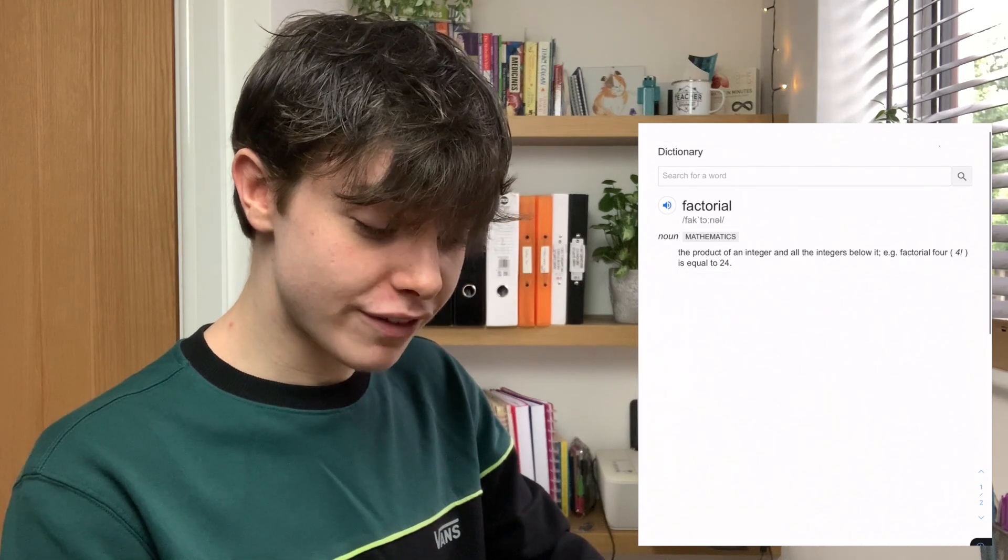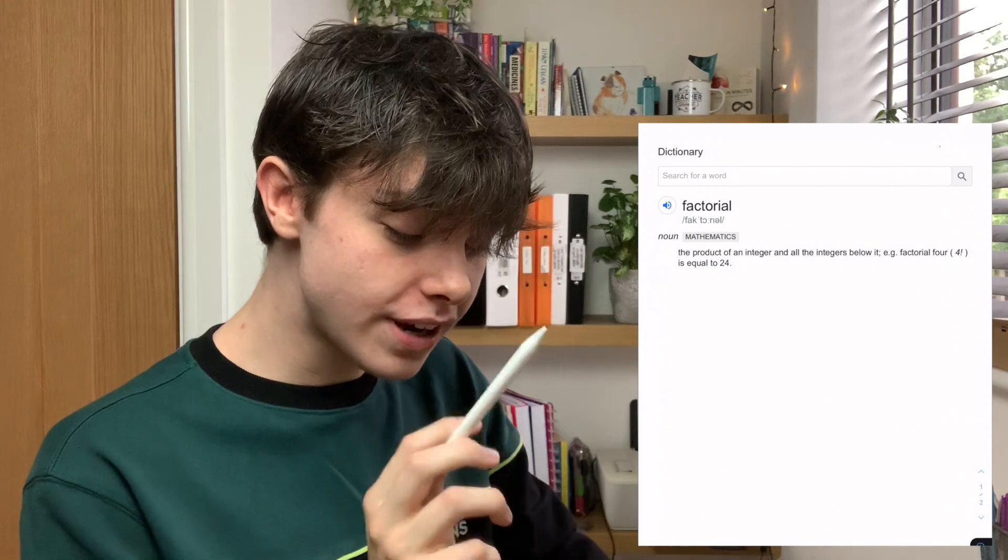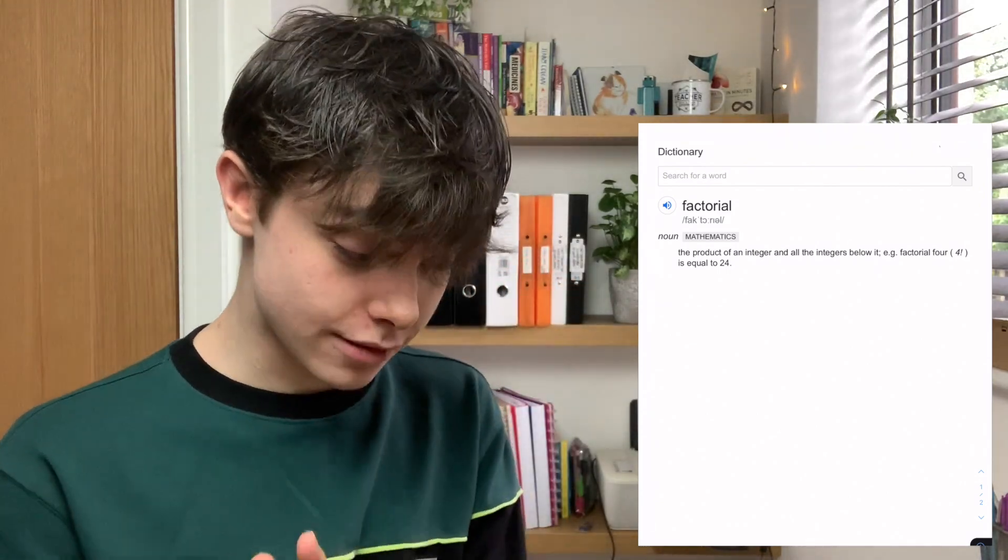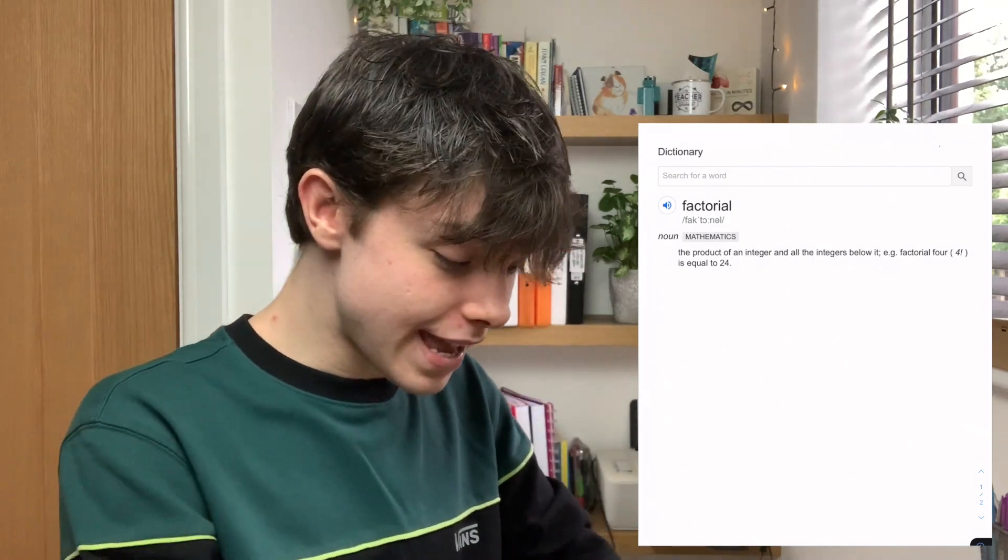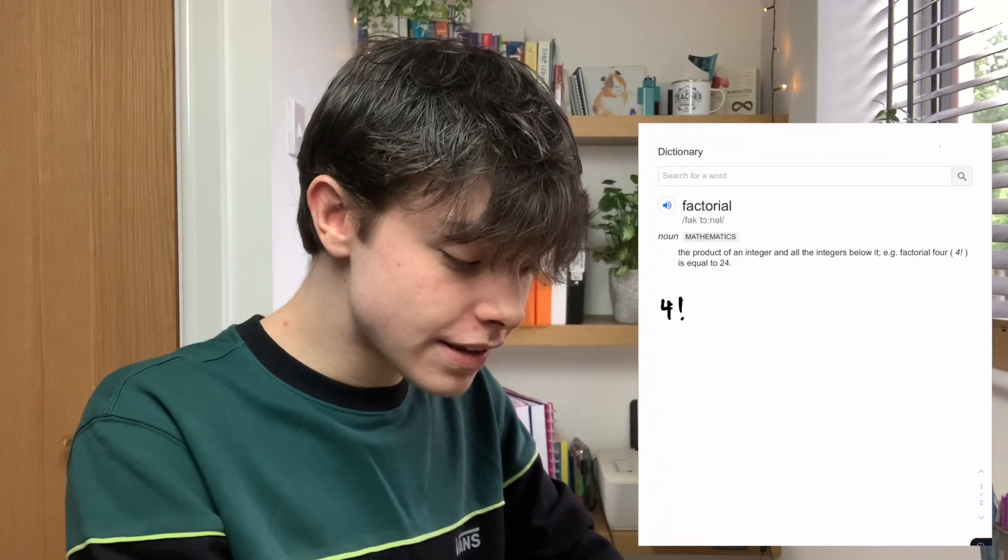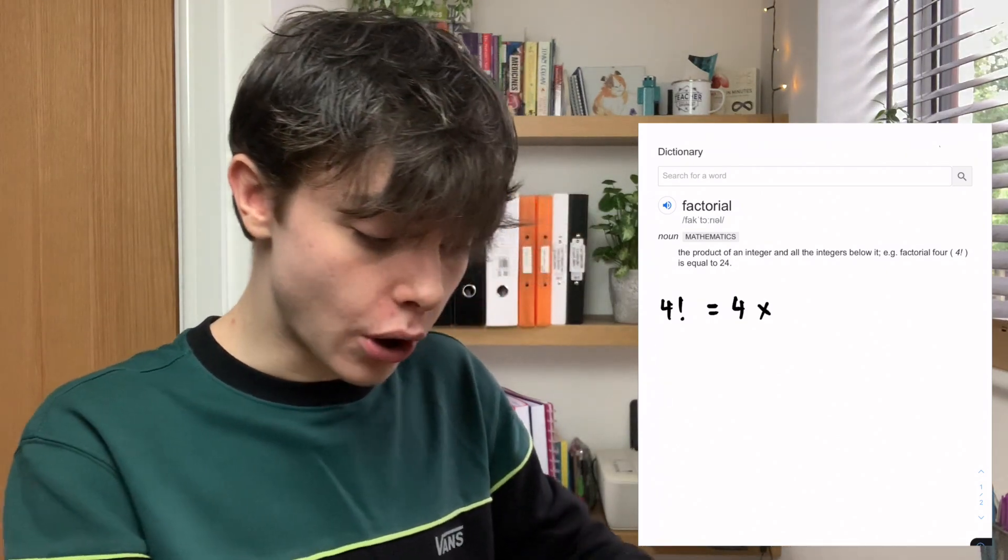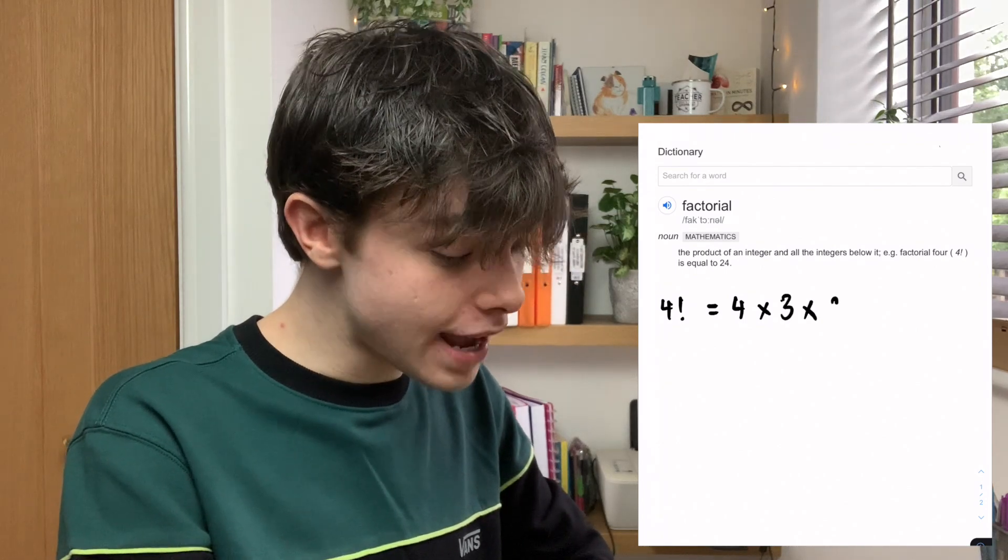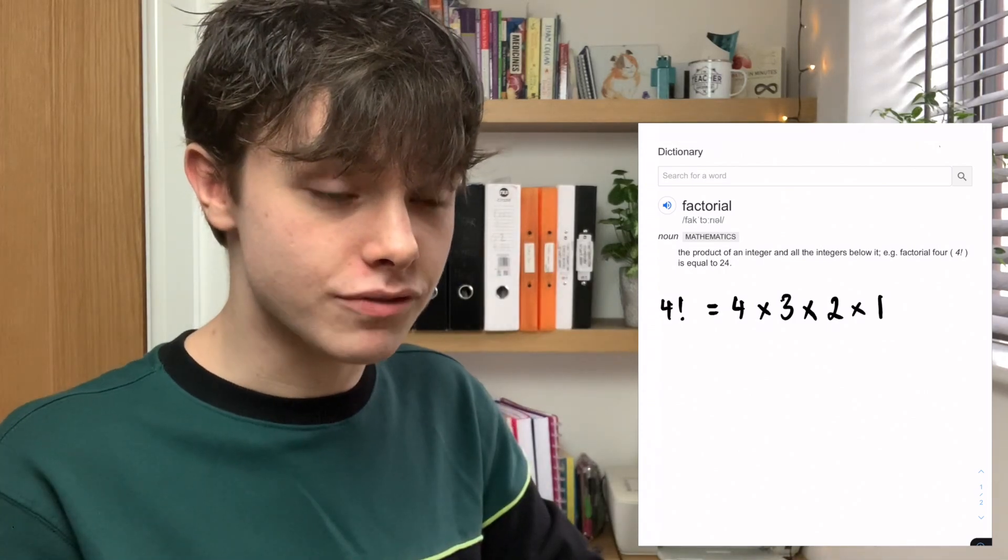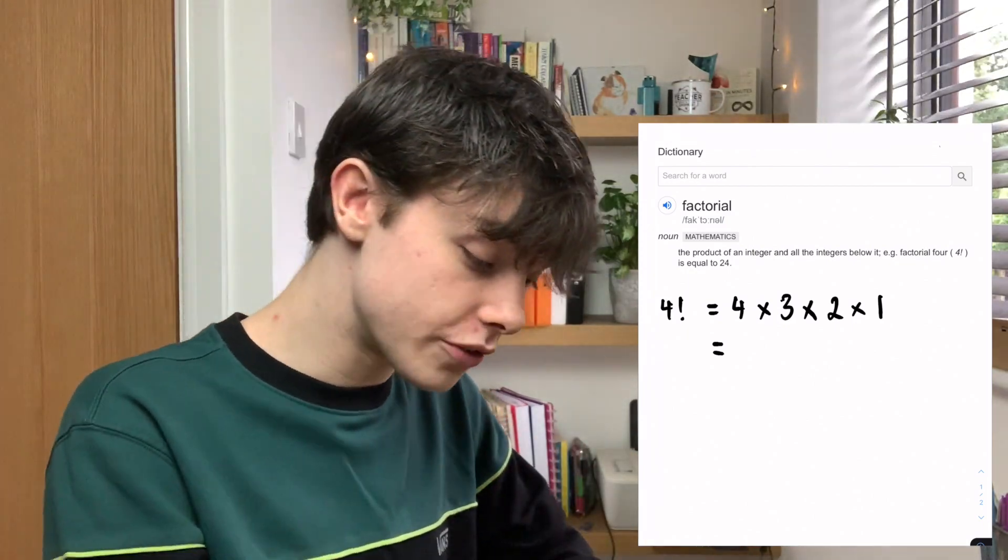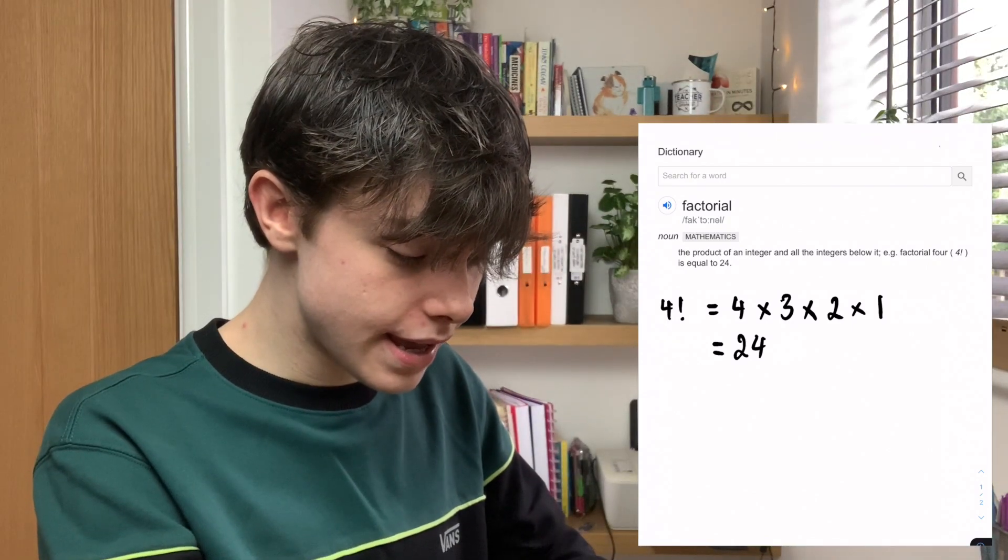Now, the first thing we need to know is what is a factorial? So, let's find out. If we Google what is a factorial, you get this definition. And it says a factorial is the product of an integer and all the integers below it. For example, factorial 4, which is represented by 4! is equal to 24. So, 4 factorial is equal to all the integers and that integer multiply together. So, 4 and then all the integers below it: 3 times 2 times 1. But not 0 or any negatives. So, what that means is we're doing 4 times 3, which is 12, times 2, which is 24, times 1 is 24. So, 4 factorial is equal to 24.